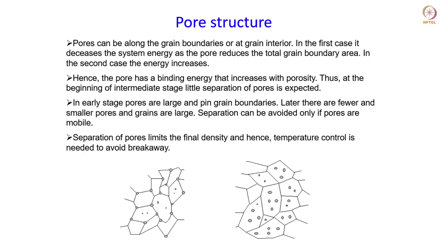When the pores are finally distributed in the material they can be either along the grain boundaries or at the grain interiors. In the first case - pores primarily along the grain boundaries - it will decrease the system energy because pores are taking some of the grain boundary area, and therefore the energy associated with this boundary will decrease, ultimately leading to a decrease in the energy of the system.